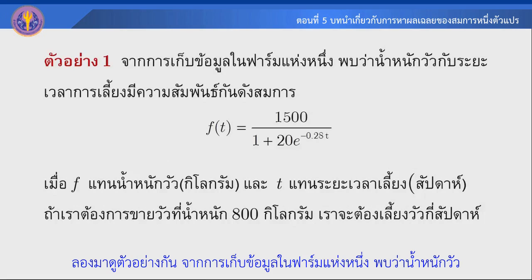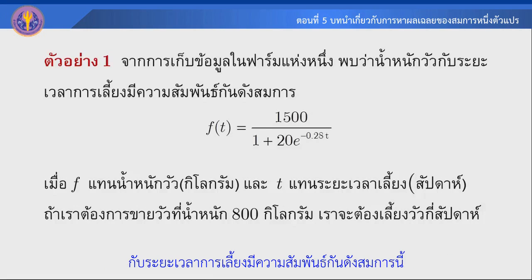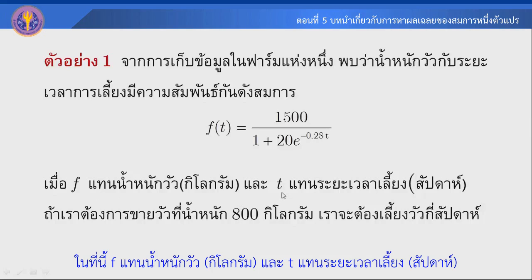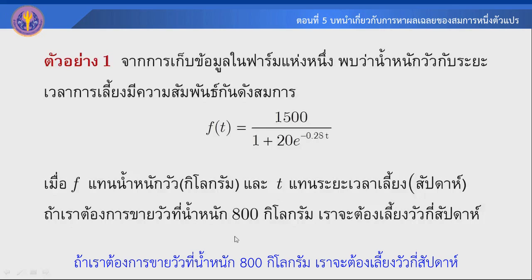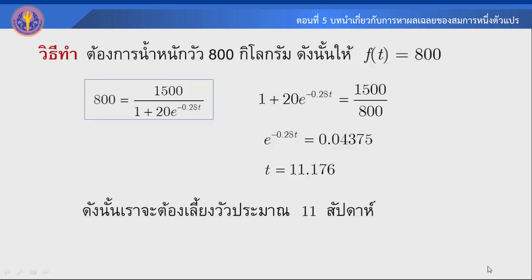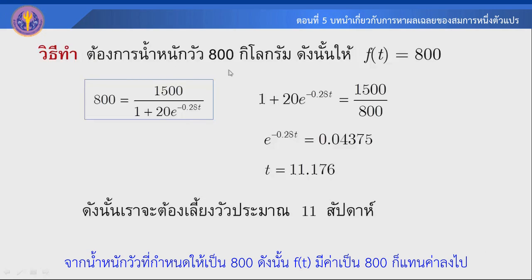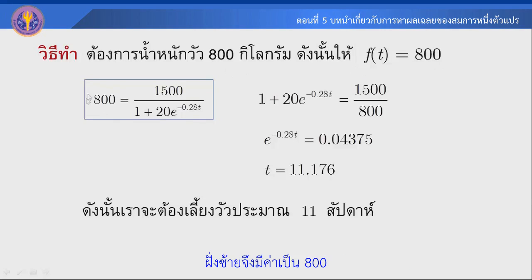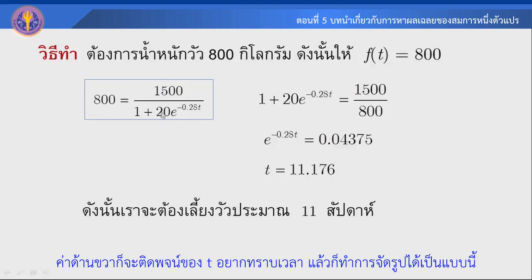จากการเก็บข้อมูลในฟาร์มแห่งหนึ่ง พบว่าน้ำหนักวัวกับระยะเวลาการเลี้ยงมีความสัมพันธ์กันดังสมการ Logistics ที่แทนการเจริญเติบโต ในที่นี้ F แทนน้ำหนักวัว T แทนระยะเวลาเลี้ยงหน่วยเป็นสัปดาห์ ถ้าเราต้องการขายวัวที่มีน้ำหนัก 800 กิโลกรัม จะต้องเลี้ยงวัวกี่สัปดาห์ โดยแทนค่า F = 800 ลงไปในสมการ แล้วทำการจัดรูป